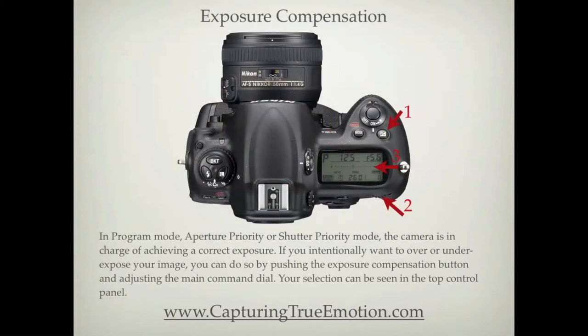In program mode, aperture priority, or shutter priority mode, the camera is in charge of achieving a correct exposure. If you intentionally want to over or under expose your image, you can do so by pushing the exposure compensation button and adjusting the main command dial. Your selection can be seen in the top control panel.